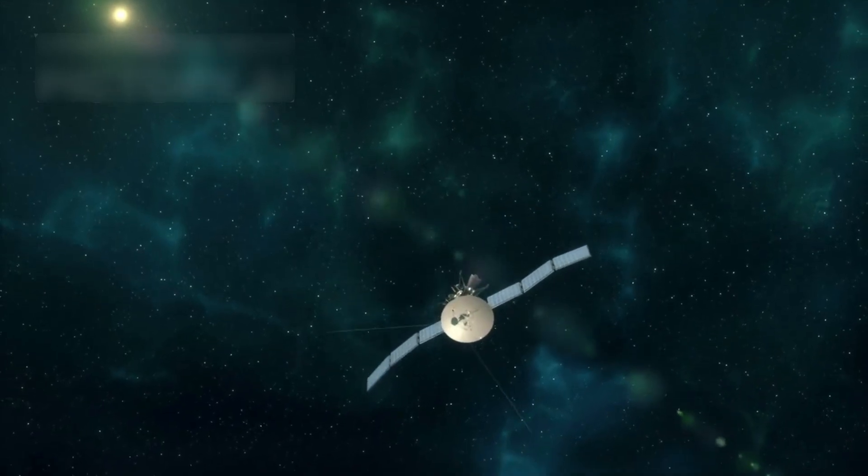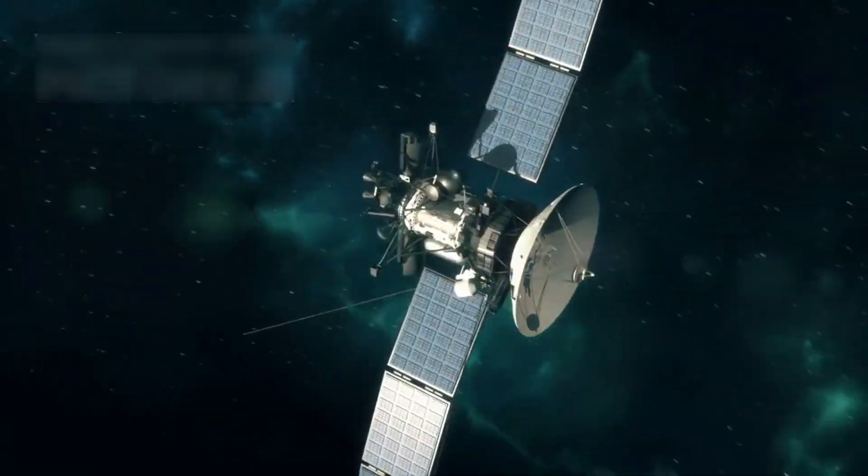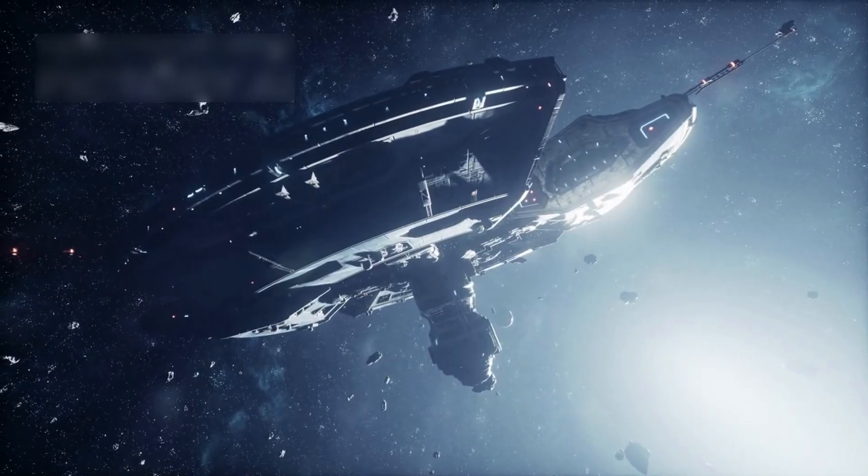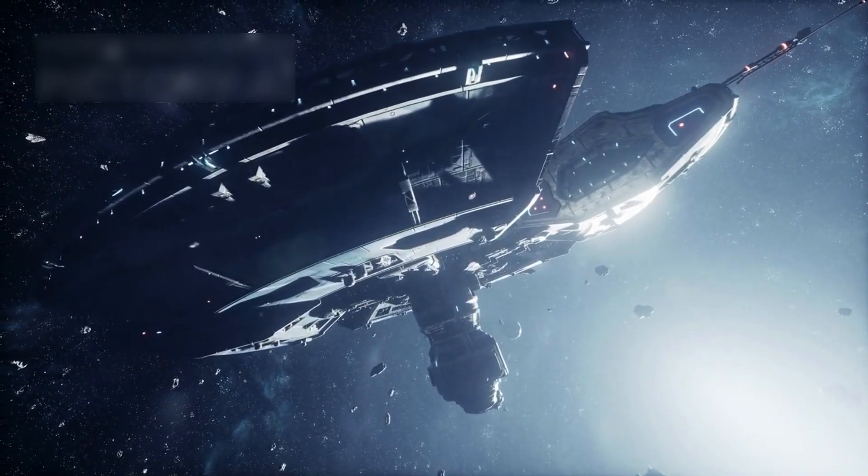Now, the probe is more than 14 billion miles away, past any familiar planetary reference. From this lonely point, Voyager 1 has begun sending back readings that make no scientific sense. Strange plasma waves and magnetic field shifts are unlike anything in interstellar space.